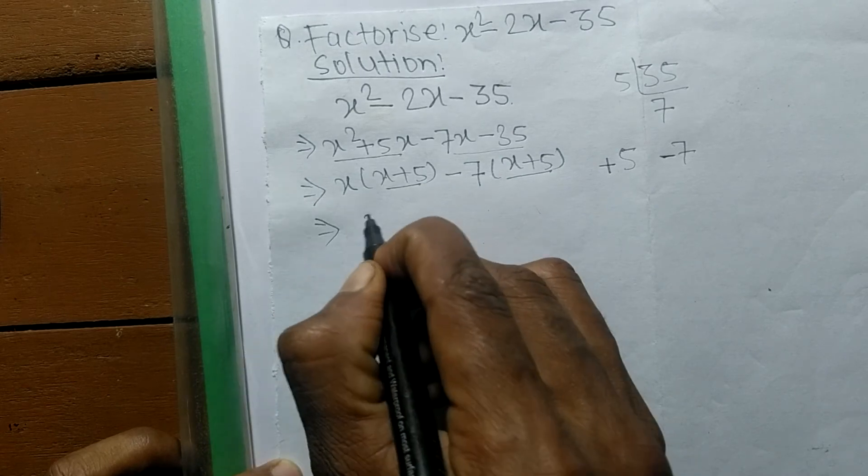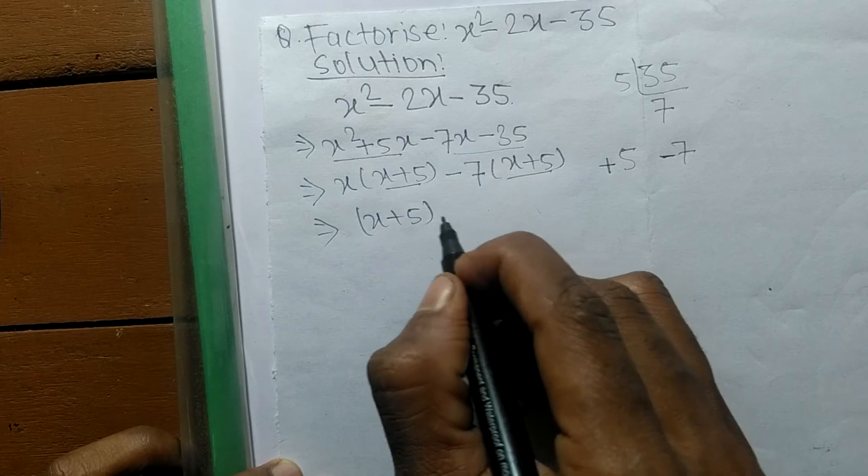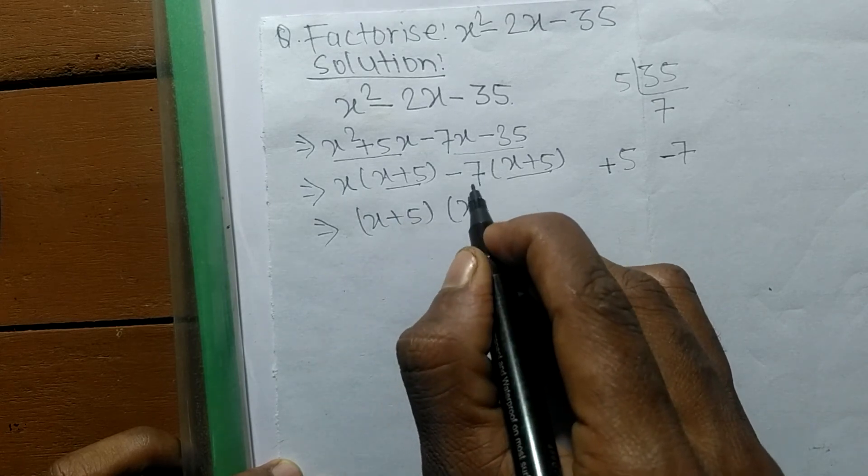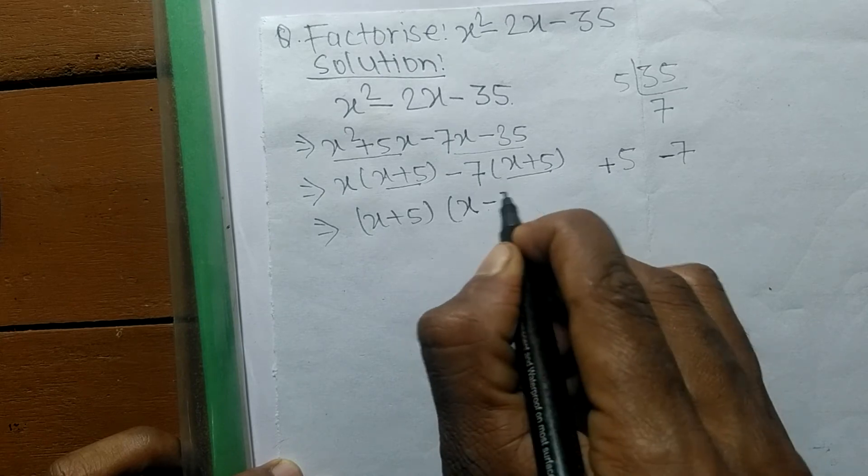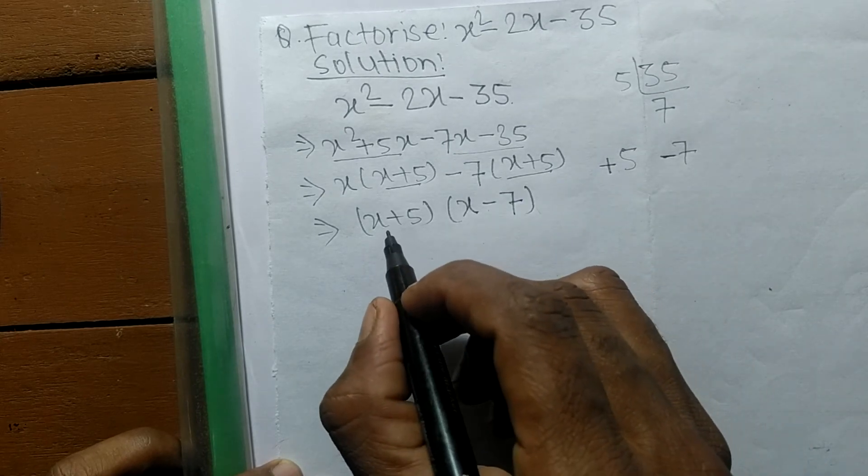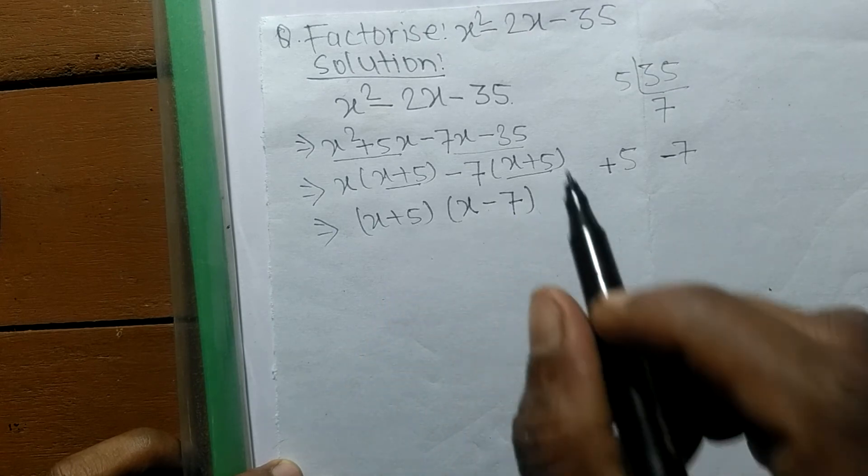So x plus 5 is common in both. The remaining in the first is x, and in the second the remaining here is -7. So (x + 5) and (x - 7) are the prime factors of x² - 2x - 35.